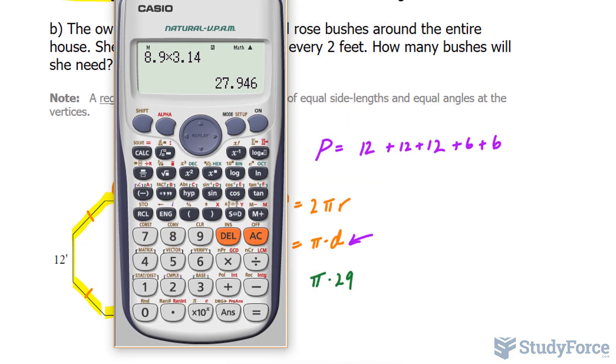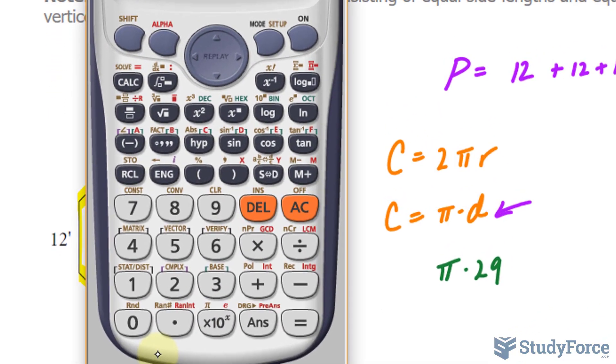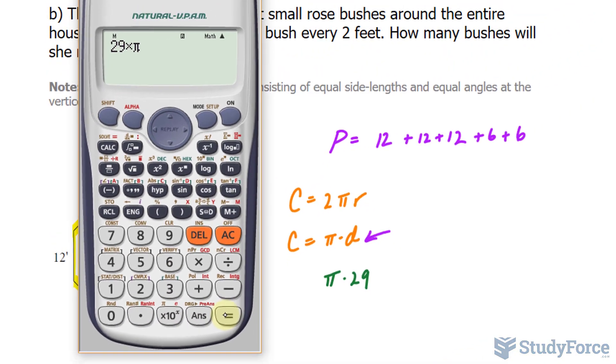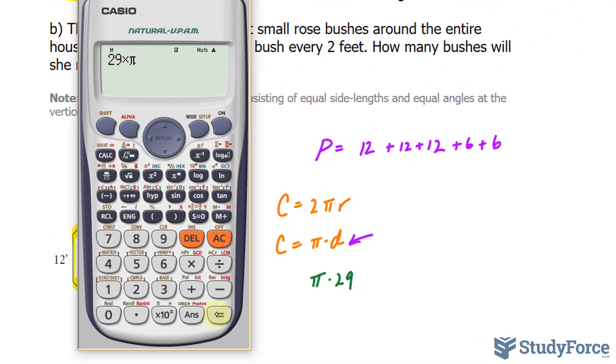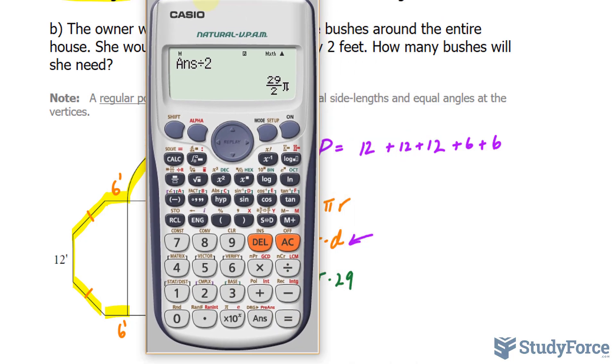So we can use this formula to find the circumference. So π times 29 feet. Let's use our calculator. 29 times π—I have a button designated for π in my calculator, and it's accessed by clicking shift and this. If you don't have this button, just multiply it by 3.14159. And we end up with approximately 91.10. That is the circumference of the full circle. A semicircle is half of that, leaving us with 45.55.